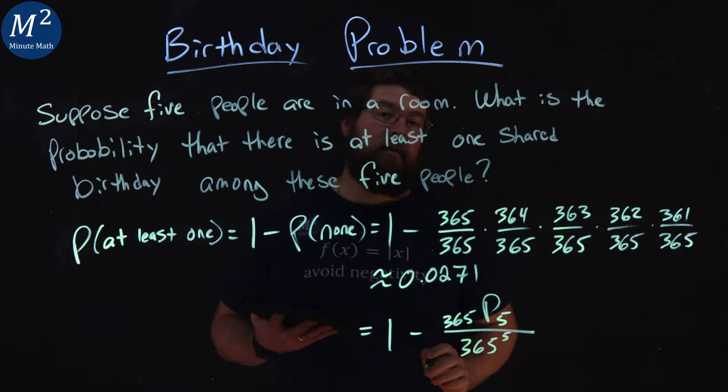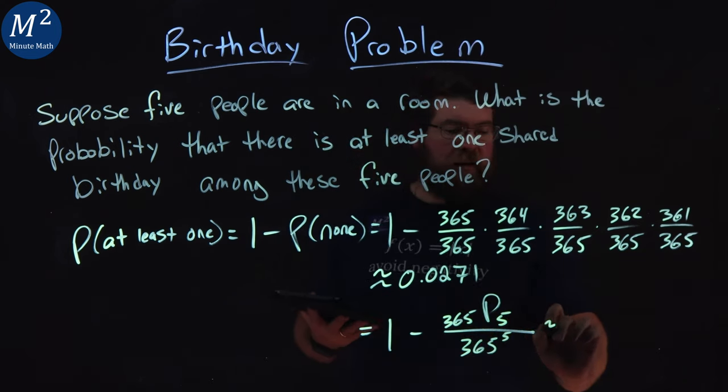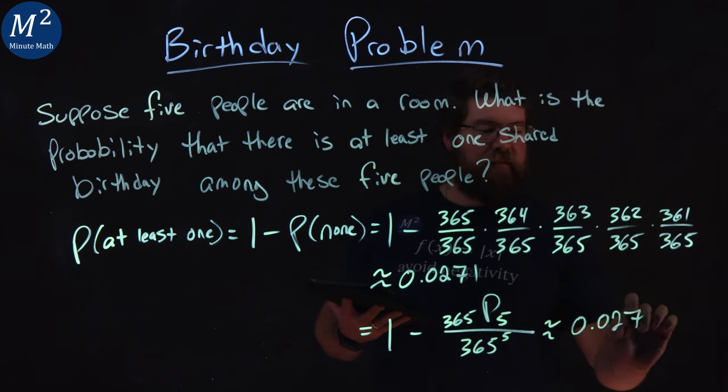365 to the fifth power. And again, that simplifies to 0.0271.